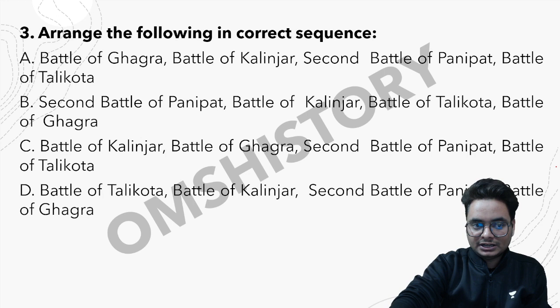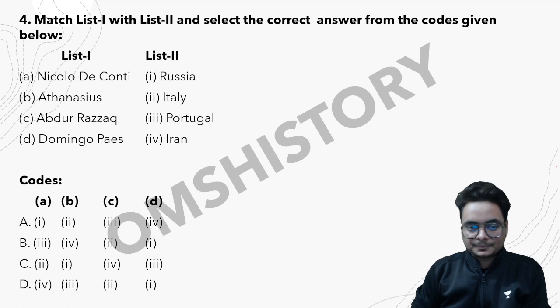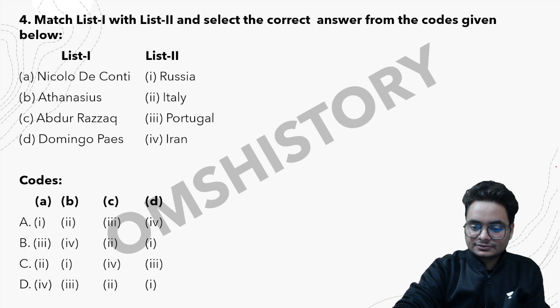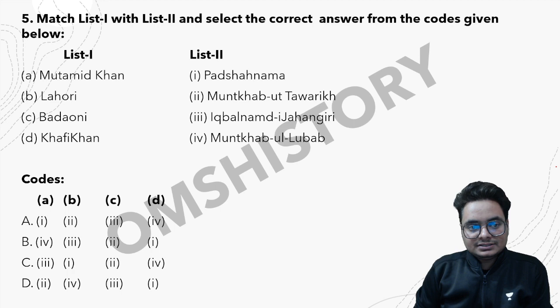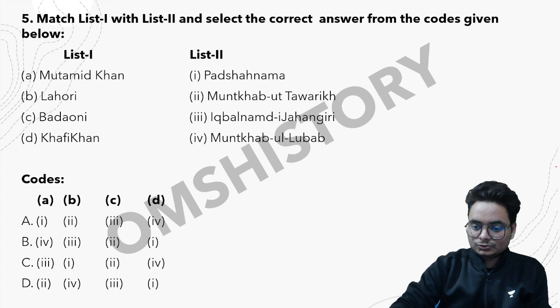The next question gives a list of travelers and asks which country they belong to. Read the question, pause the slide, and write the answer. After that, the next question shows chroniclers and their writings or works — you have to match them correctly.